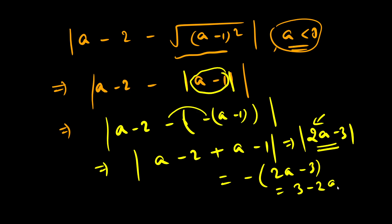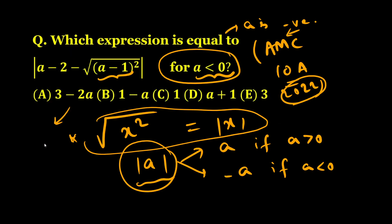So finally, the answer is 3 - 2a, which is option A. Now if you forget that a < 0, you might get a wrong answer. Please don't forget this part, because this decides how I will open the modulus sign—whether with positive or negative sign—using this definition.